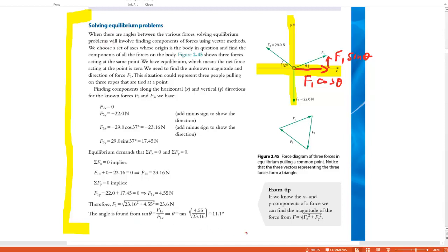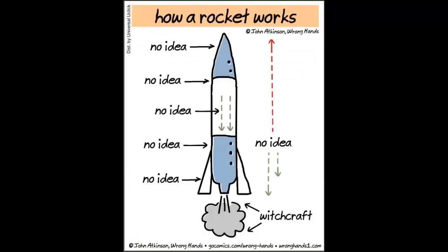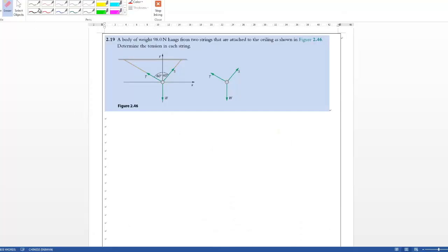Once you decompose a force into vertical and horizontal components, you can apply F equals MA to horizontal and vertical separately. I'll let you look at the example yourself first — you may want to pause the video. If you're okay with it, try question 2.19, which is very similar. If you have difficulty, watch me do it step by step.